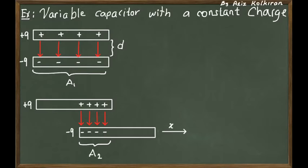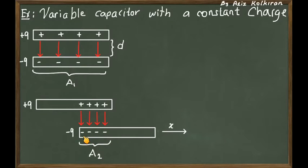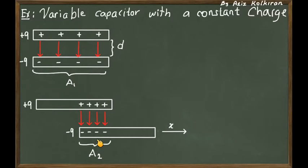Let's call the initial overlapping area A1, which is the total area of one of the plates. We can think of these plates as a square of side L, so A1 = L². When you move the lower plate a distance X, the overlapping region will reduce to L minus X, so the new overlapping area A2 = L(L − X).